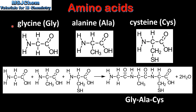Next we look at the formation of a tripeptide made from three amino acids: glycine, alanine, and cysteine. As you can see, the side chain on each amino acid is different. Glycine has a hydrogen atom, alanine has a CH3 group, and cysteine has a sulfhydryl group. Here we have the reaction of the three amino acids in a condensation reaction forming a tripeptide and two molecules of water.